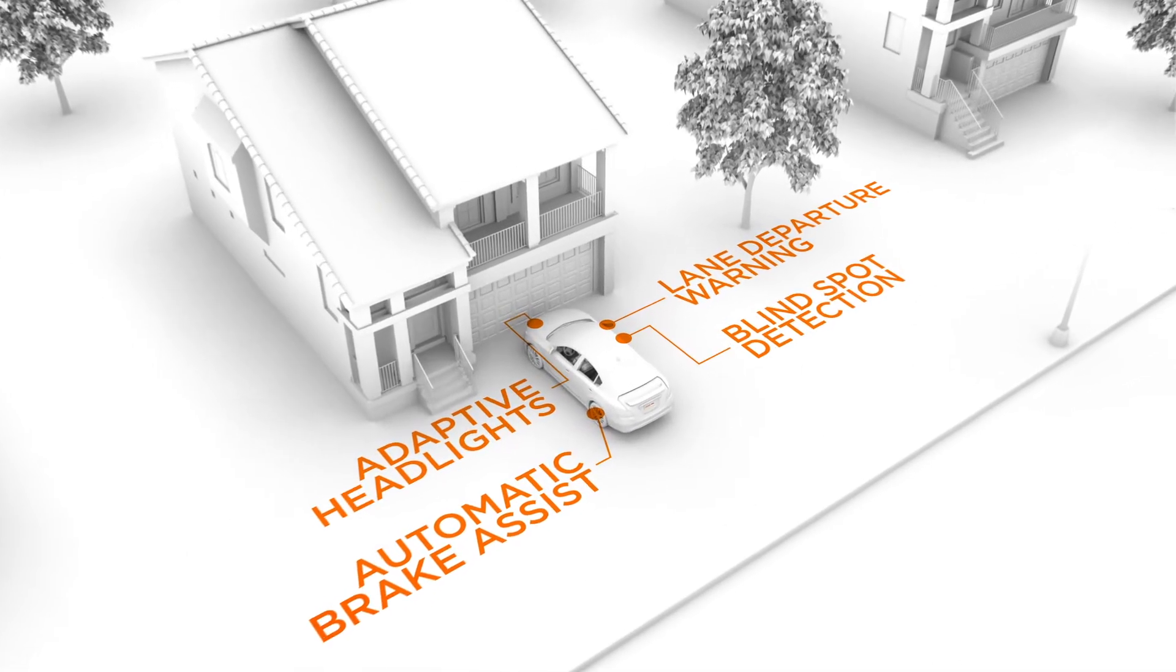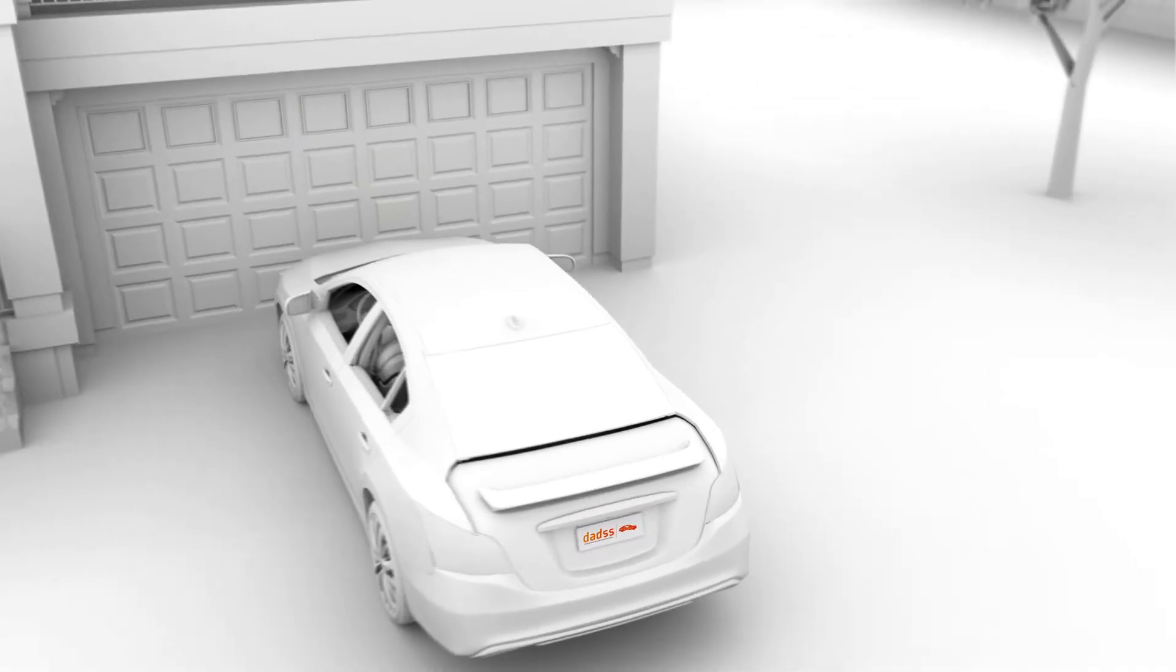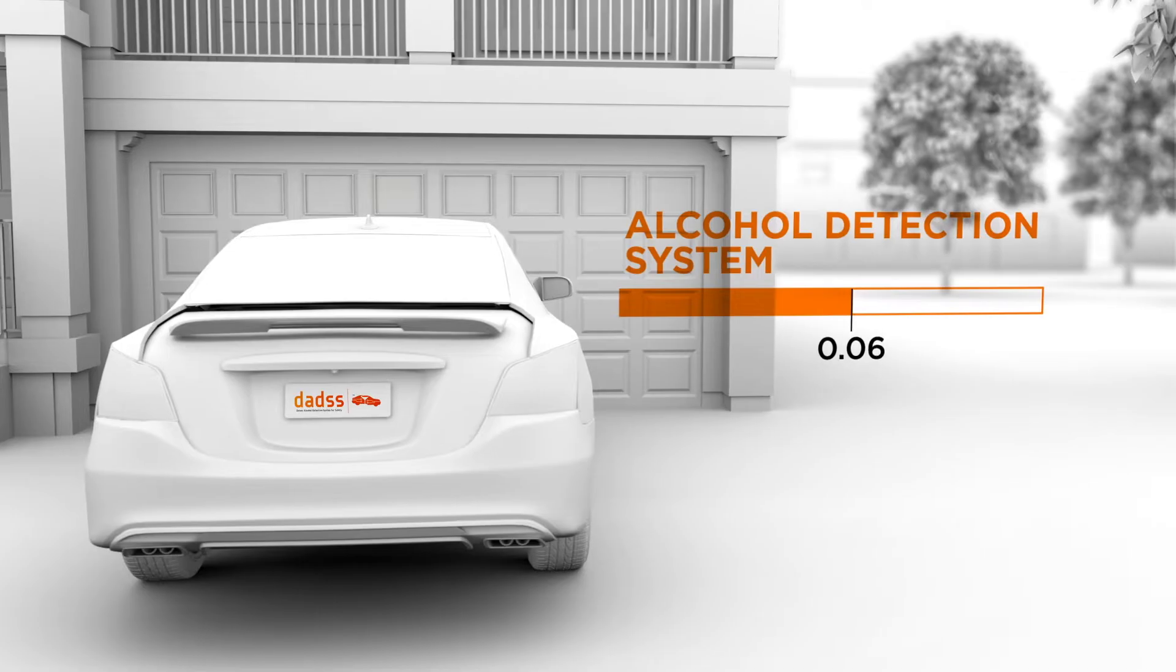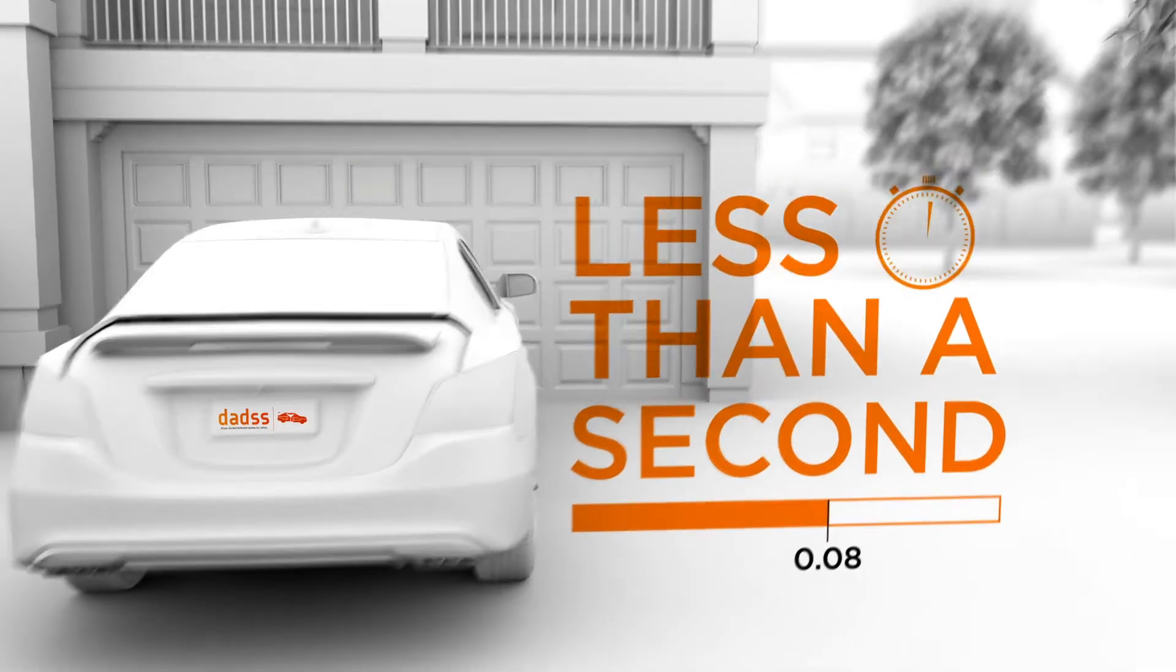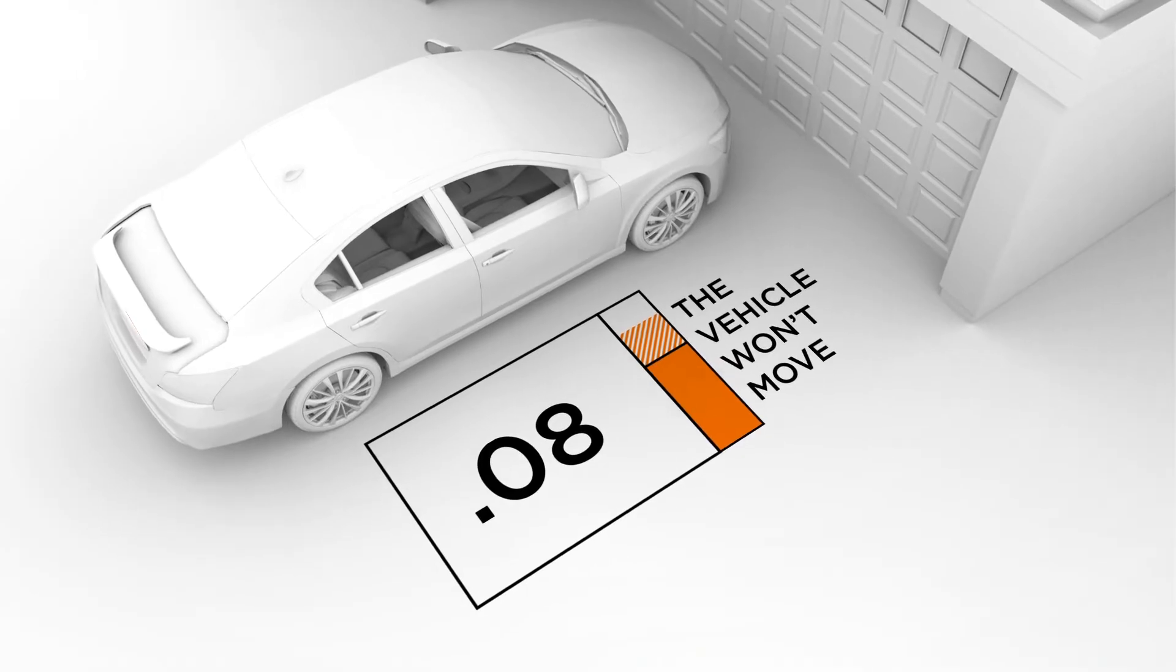Our cars are getting smarter, and now a new safety feature is being developed to protect against drunk driving. The alcohol detection system will measure the alcohol in a driver's blood in less than a second. If it is above the legal limit, the vehicle won't move.